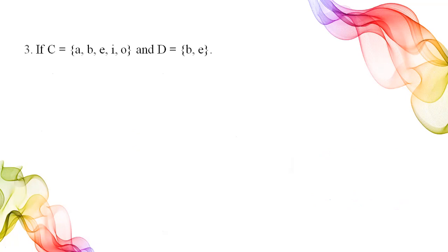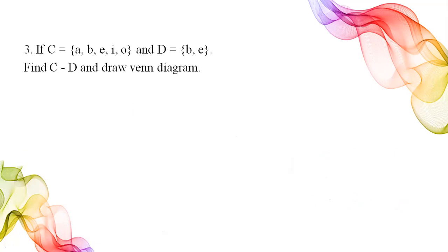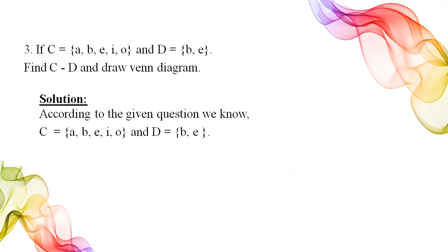We have another question. Set C has elements a, b, e, i, o, and set D has elements b and e. We need to find C minus D and draw the Venn diagram. The answer for C difference D is a, i, o, because b and e are present in D as well. Since these two sets are overlapping, we need to keep that relationship in mind when drawing the Venn diagram.